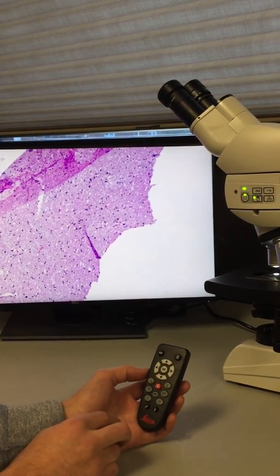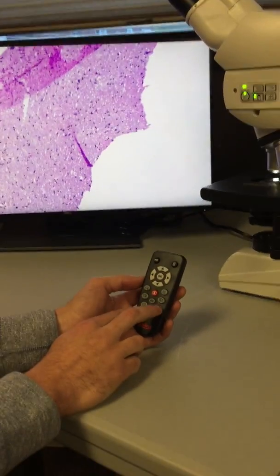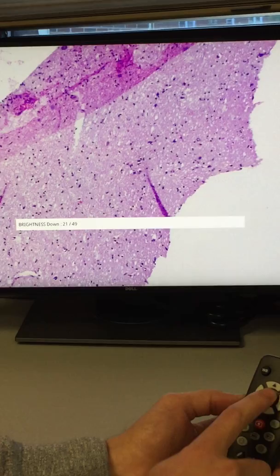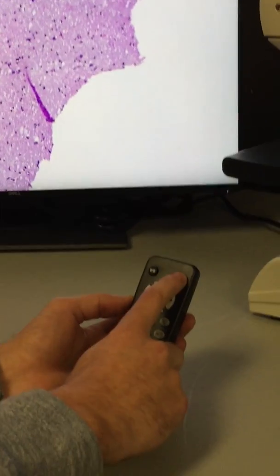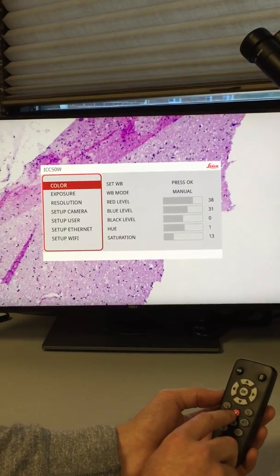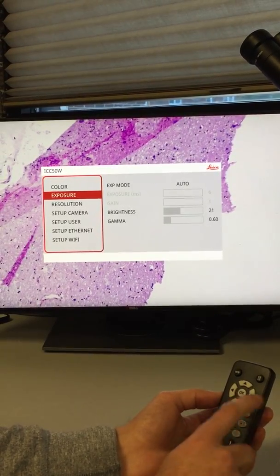The camera also allows you to control some of the features of the camera, such as the brightness, up and down. You can also display the camera information, and adjust the exposure, the resolution, and other settings.